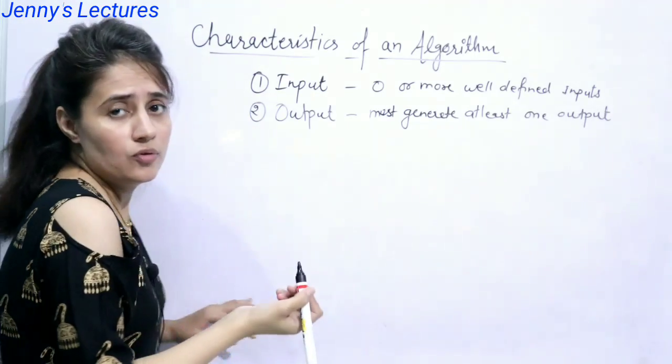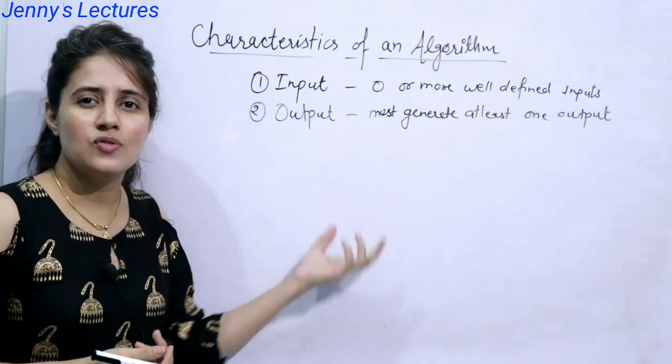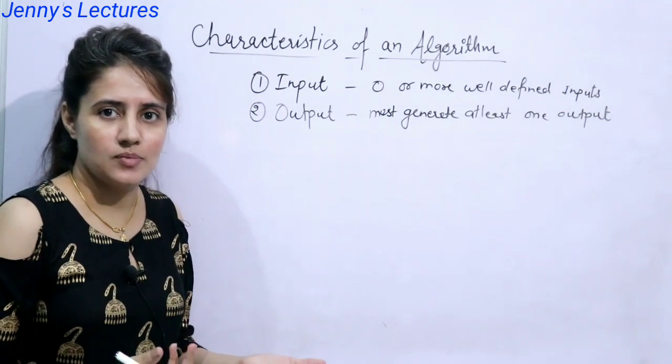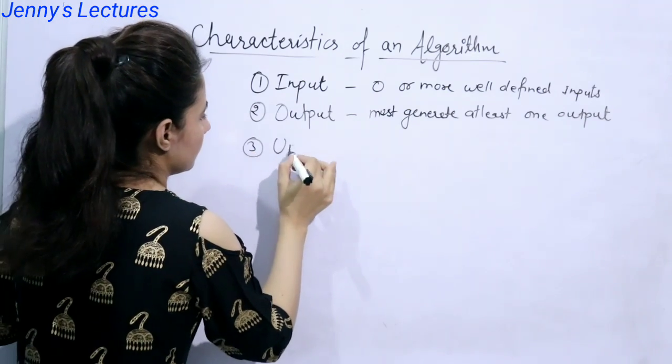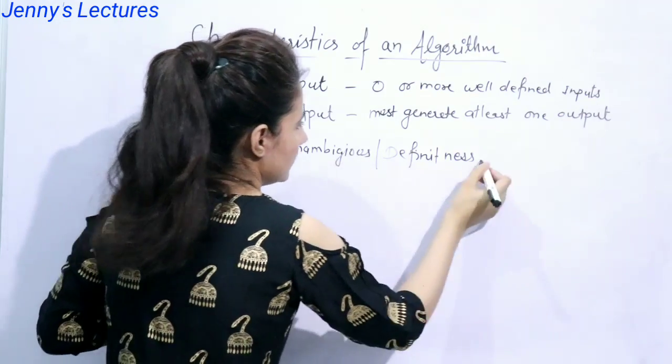See, if there is no output of an algorithm, then obviously what is use of that algorithm? Why we are writing that algorithm? Third is unambiguous or you can say definiteness.